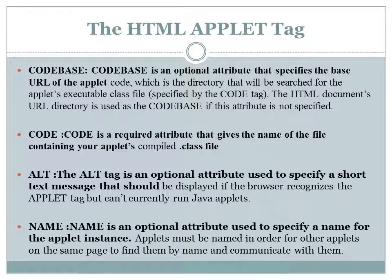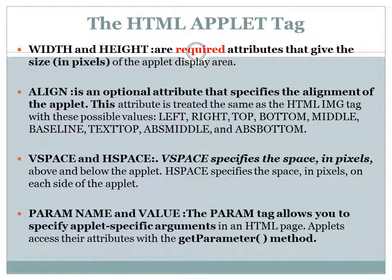The alt attribute specifies a short text message displayed if the browser has issues running the applet. Next is name, also an optional attribute, used to give a name to the applet instance. The two required attributes width and height specify the size of the applet display area in pixels.